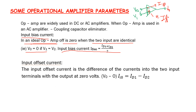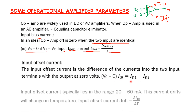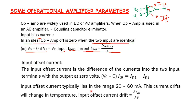The input offset current is defined as Id1 minus Id2. The input offset current typically lies in a specific range.